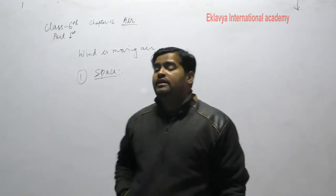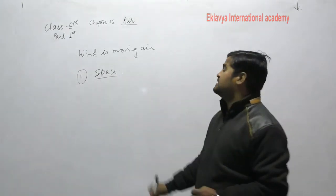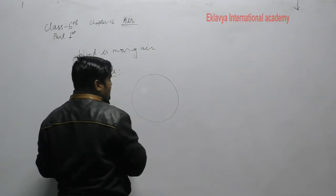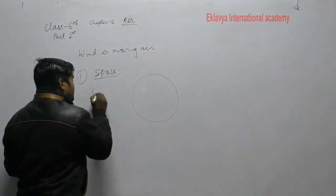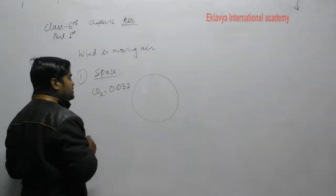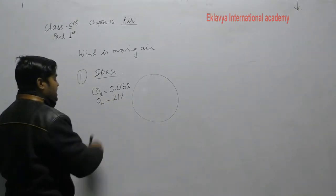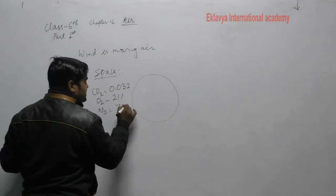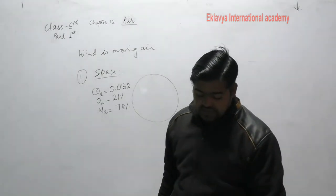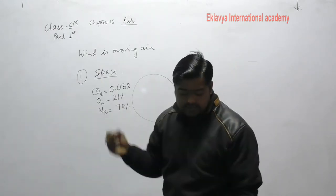Air is a mixture of gases. Clean air comprises mainly these gases: CO2 is present at 0.032 percent, oxygen at 21 percent, and nitrogen at 78 percent. Remaining gases are also present. The composition of all these gases is given in your book.